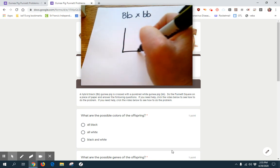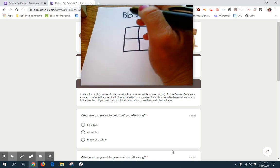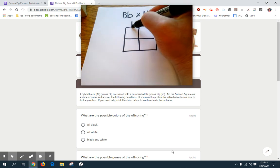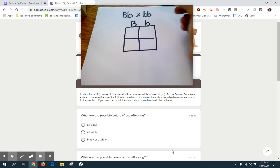So again, we do our square as always. First parent given goes on the top, one letter per box. Second parent given goes on the side, one letter per box.